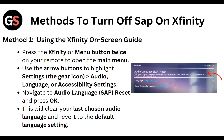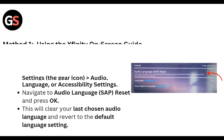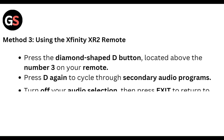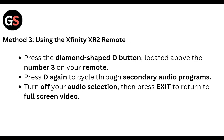Method 2: Using the Xfinity screen portal. On any Xfinity screen portal page, click on the Settings icon at the top right. On the Settings page, click Accessibility. In the Accessibility menu, turn off the SAP option and choose your preferred audio language from the drop-down menu.